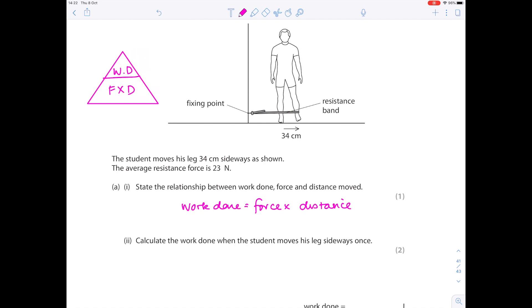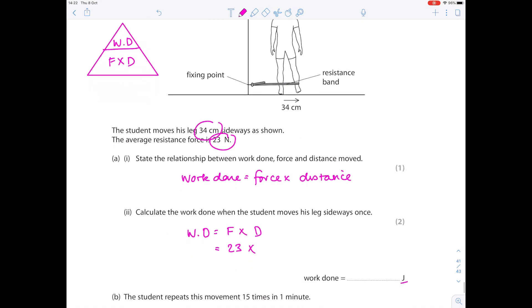Calculate the work done when the student moves his leg sideways once. Write out that equation. The force is 23 newtons. The distance moved is 34 centimeters. Be careful, our final unit is in joules so we need to convert that into meters. So your final answer here is 7.82 joules.